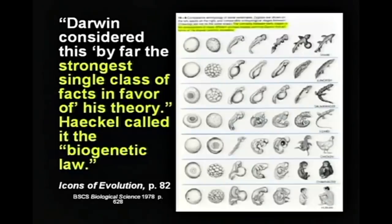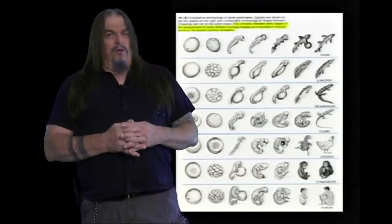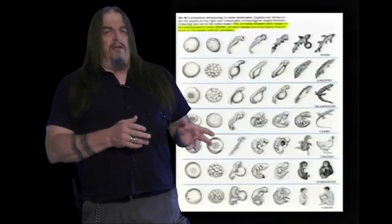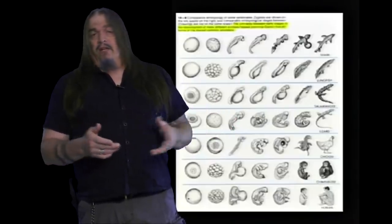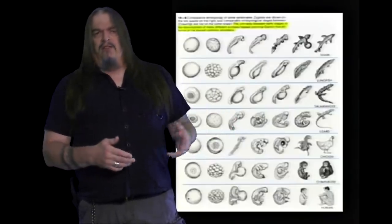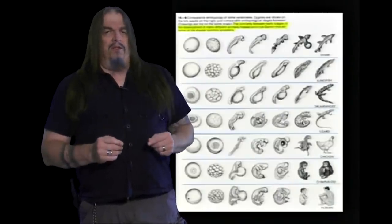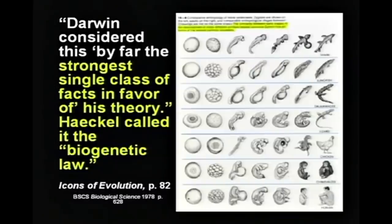The guy who made up this dumb idea is named Ernst Haeckel. So the preacher says that none of this is real — that Haeckel just made it up, and that Haeckel's drawings were the evidence that convinced Darwin in the first place. Remember that when it comes up again in a moment. Haeckel called this idea the biogenetic law, which means as animals develop inside the mother, they go through the stages of evolution.